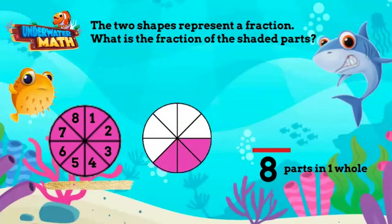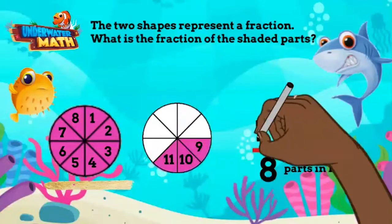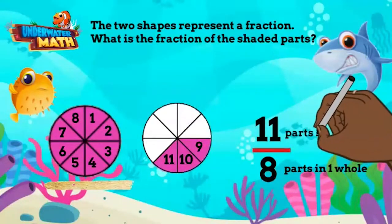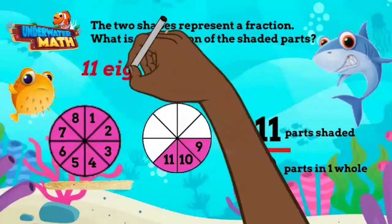Now let's find the numerator by counting how many parts, or eighths, are shaded. I'll count: one, two, three, four, five, six, seven, eight, nine, ten, eleven. There are eleven parts shaded, so we write eleven as our numerator. Eleven eighths is the fraction of the shaded parts.